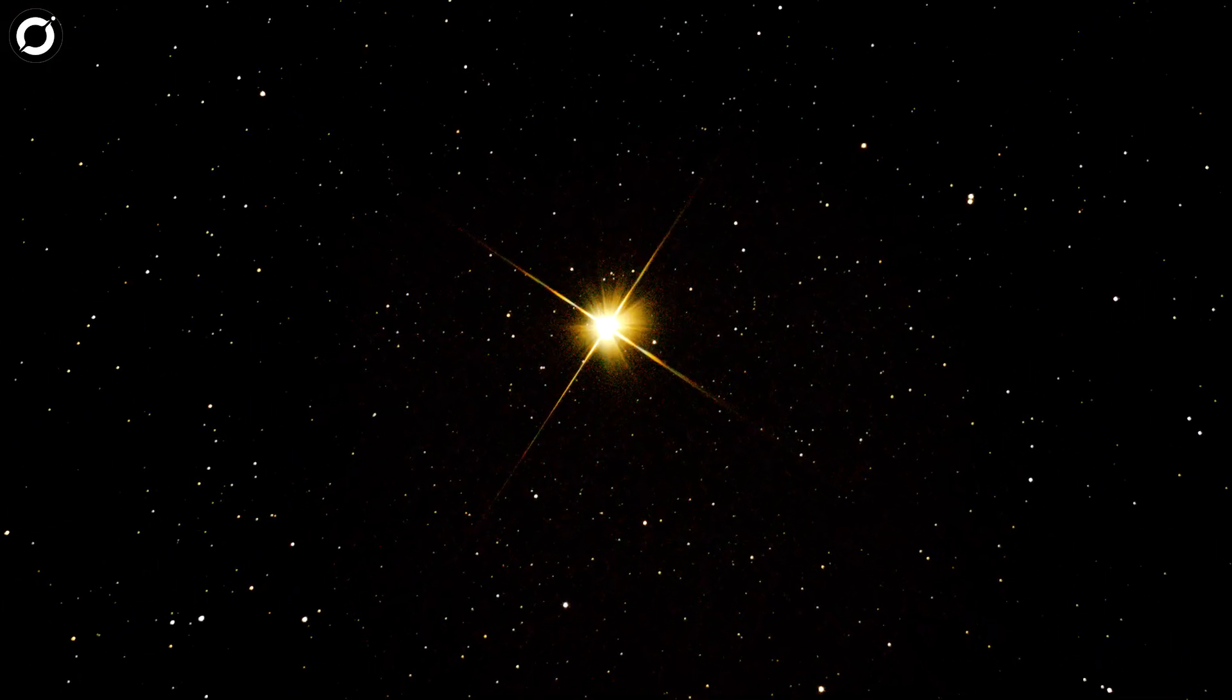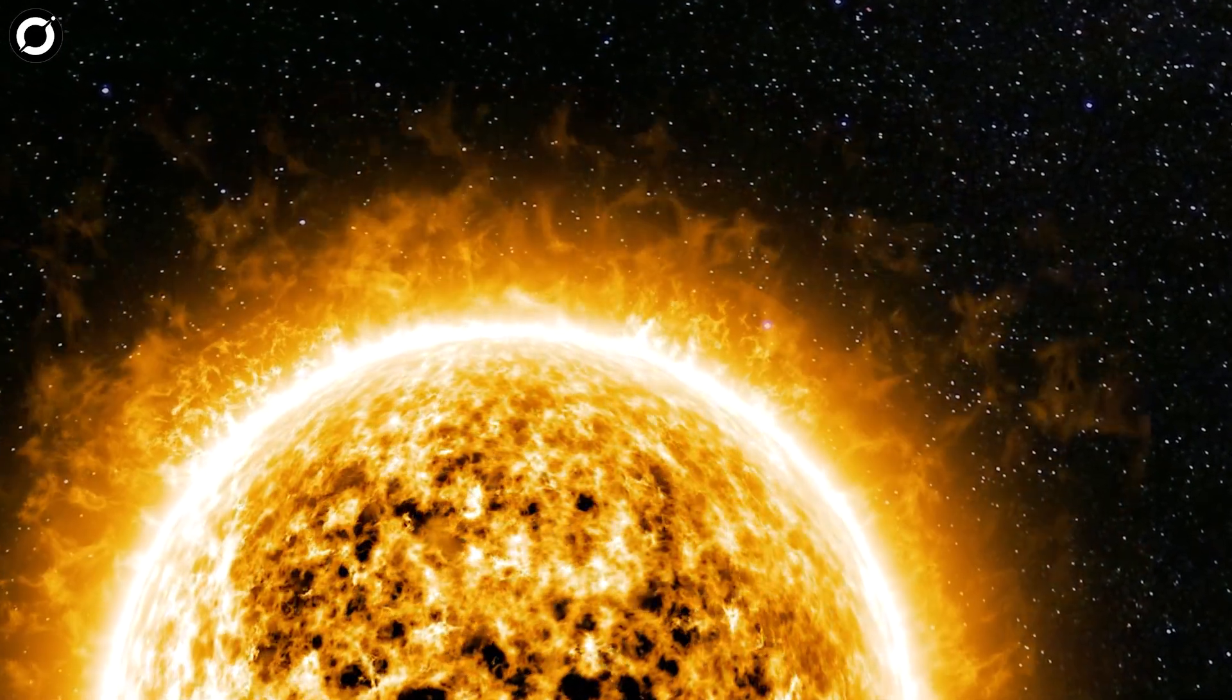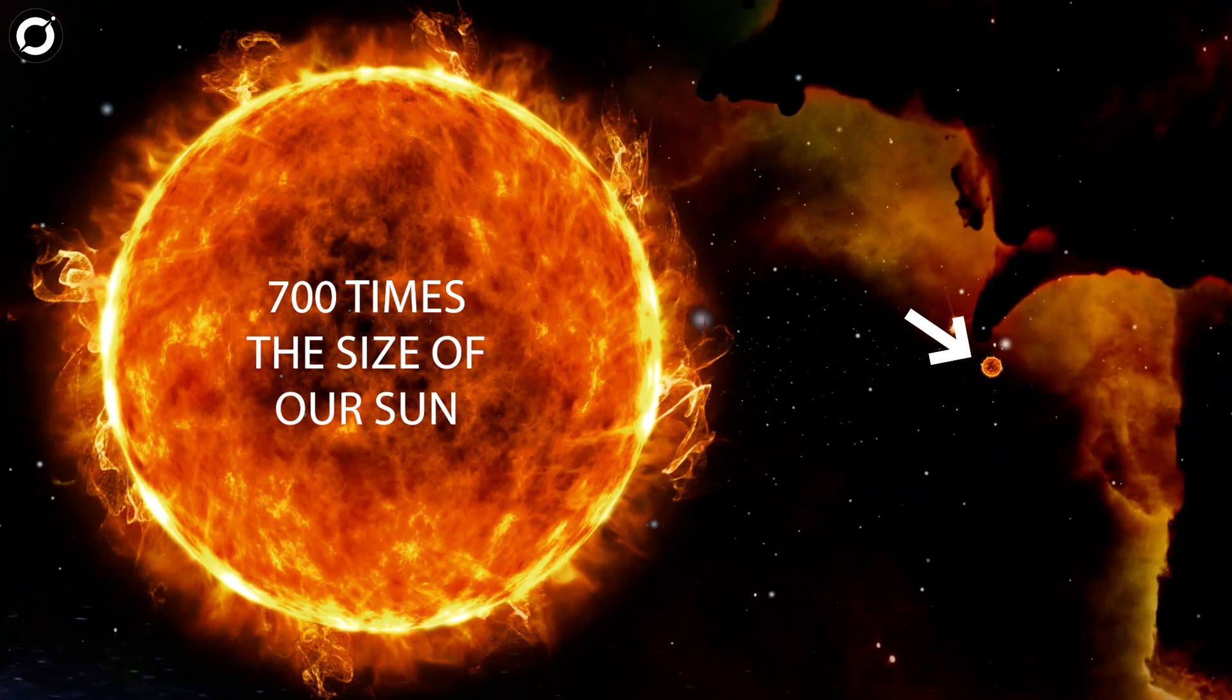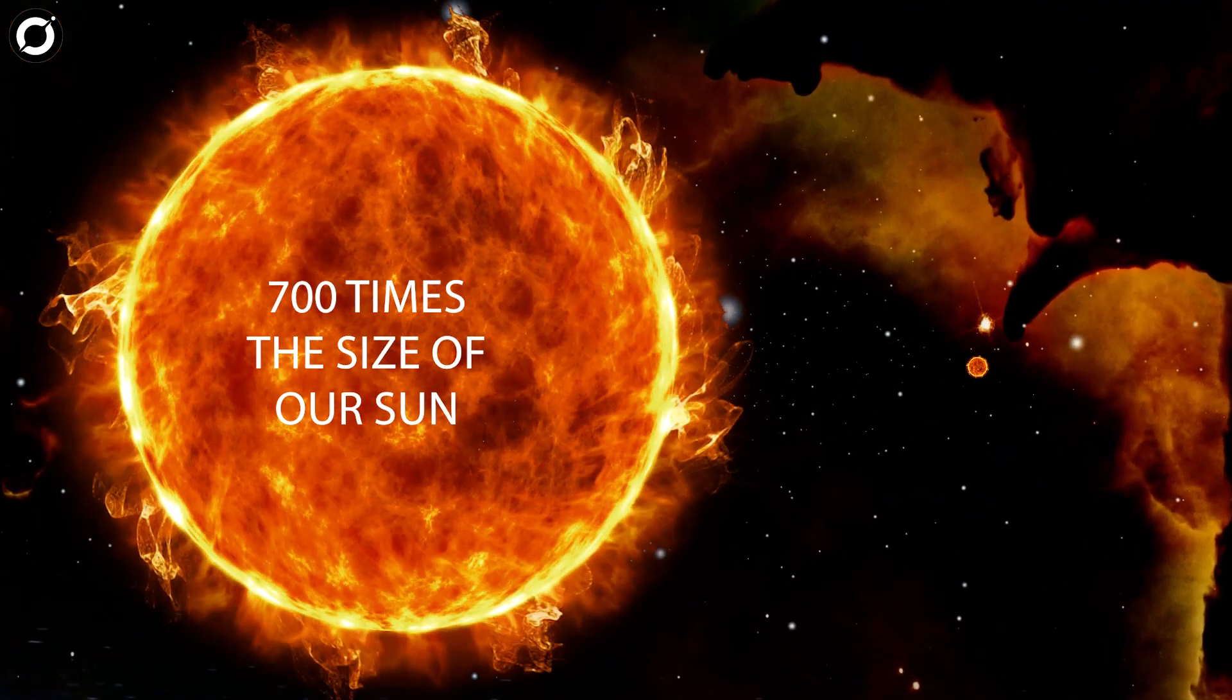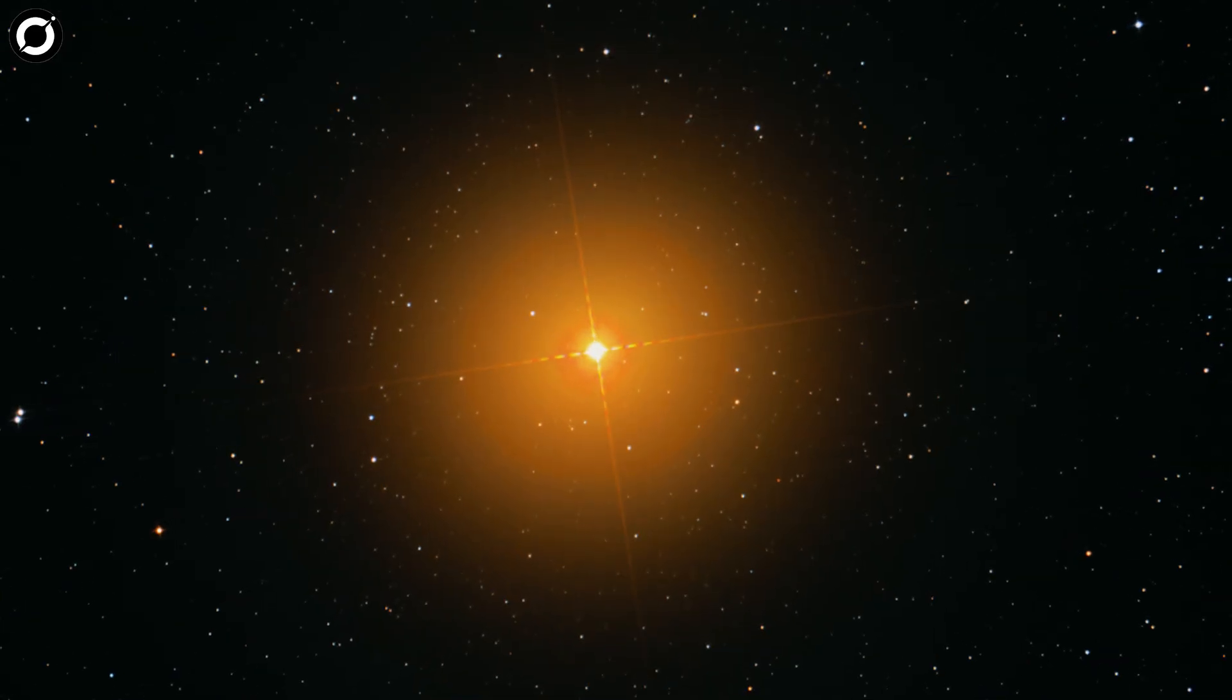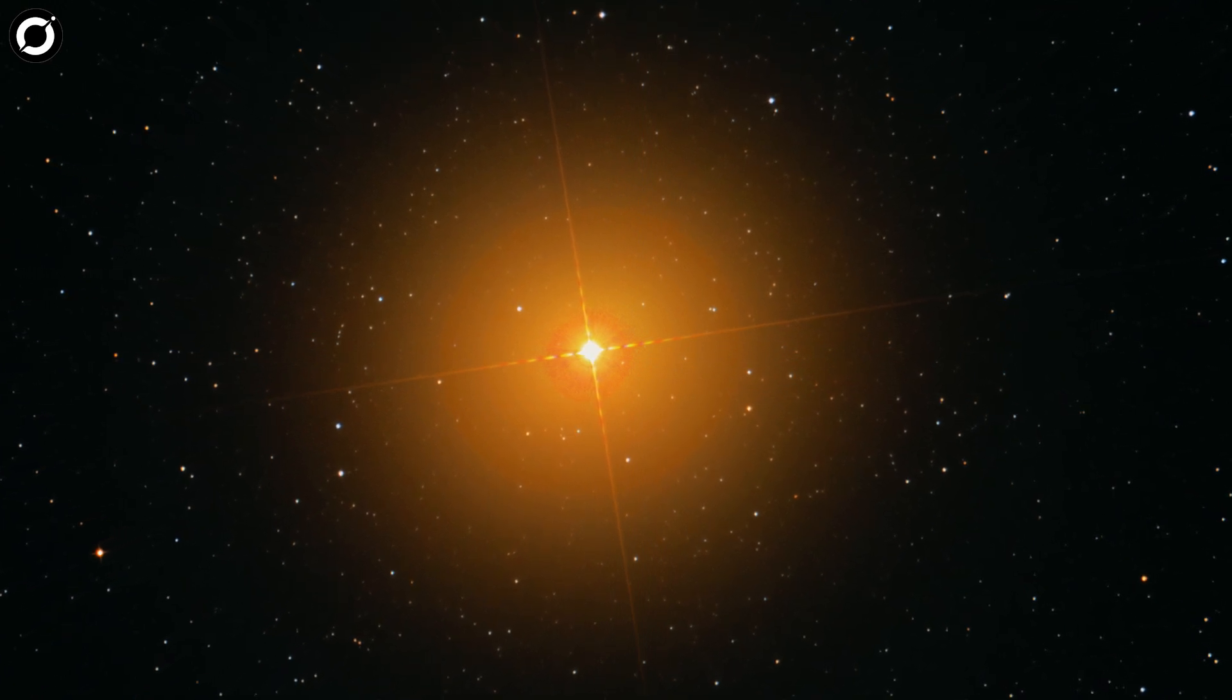Betelgeuse is roughly 10 million years old, an infant when compared to the Sun which is nearly 5 billion years old. But being 700 times the size of our Sun, it burns through its materials faster, thus giving rise to the bright reddish light which is so clearly visible from the Earth in the night sky.